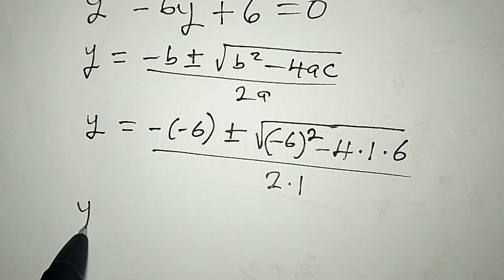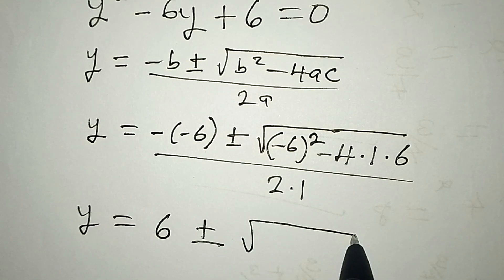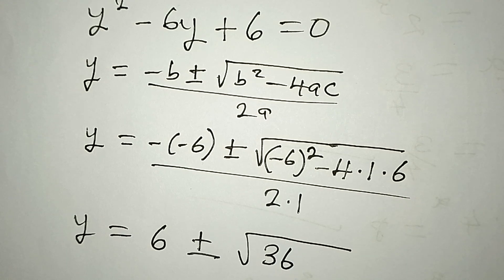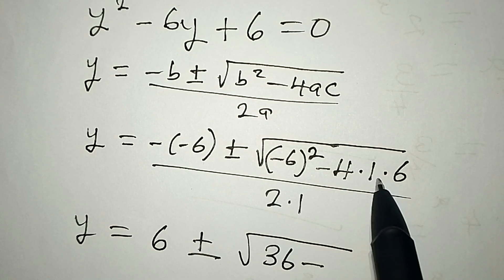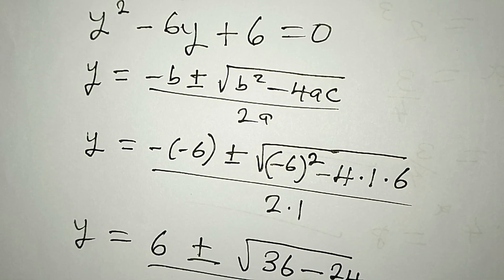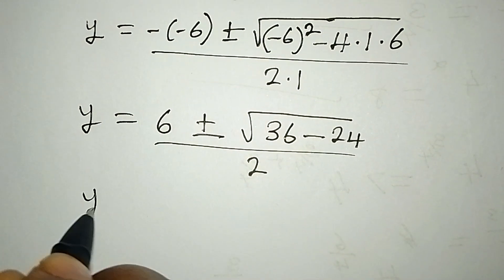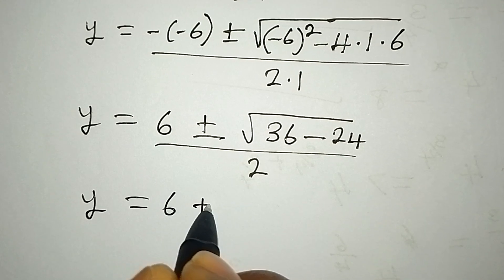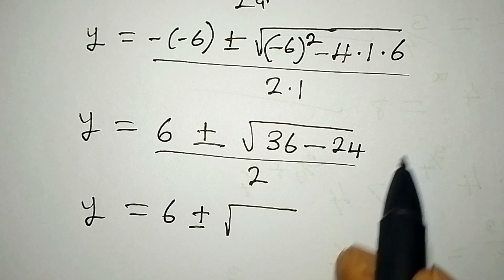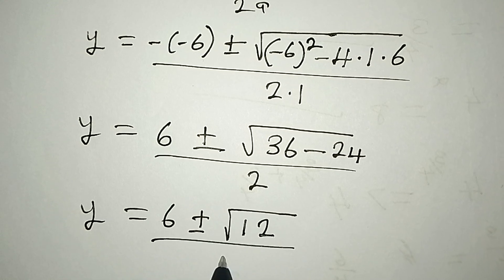This means that y equals — negative negative gives positive — plus or minus square root of: the square of negative 6 gives 36, then minus 4 times 1 times 6 gives 24. And this is all over 2. So we have the square root of 36 minus 24, which gives 12, all over 2.